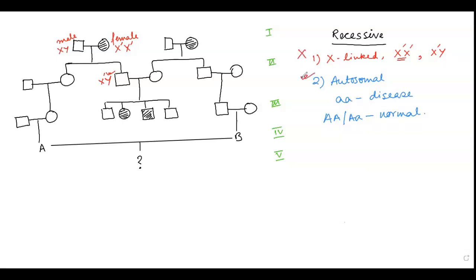So the only remaining option is autosomal disease. We denote the disease condition as 'aa' (small a, small a) and the normal conditions as 'AA' (capital A, capital A) or 'Aa' (capital A, small a).